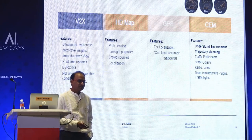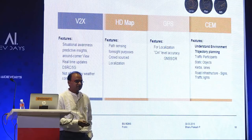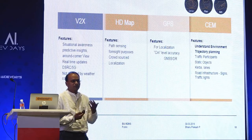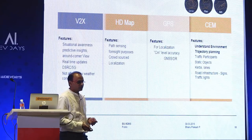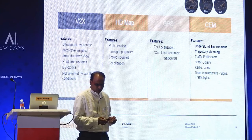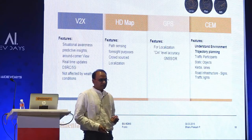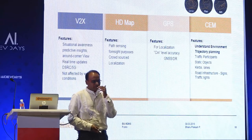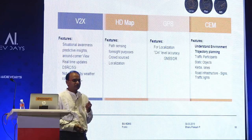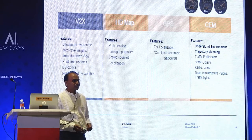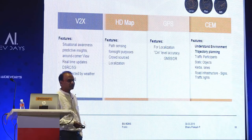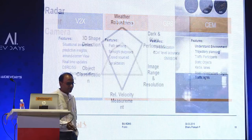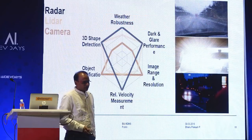GPS is for localization — you need to know where you are with respect to the 3D world. And finally the CEM — comprehensive environment model — which gives complete scene understanding. This summarizes the advantages and drawbacks of different sensors and their performance.